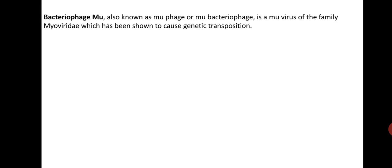Bacteriophage mu, also known as phage mu, is a virus of the family Myoviridae, which has been shown to cause genetic transposition. This virus has a tail in its structure. Its genome is packed and consists of a single linear DNA molecule with about 37,000 base pairs.